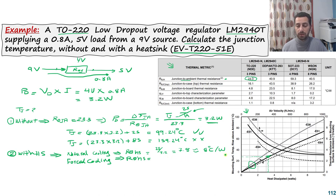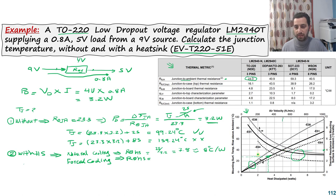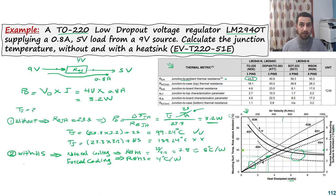For forced cooling, we consider an air velocity of 500 ft/min. Reading the forced cooling curves from the graph at 3.2 W gives a thermal resistance of about 4°C/W. Note that the y-axis of the forced cooling graph is in °C/W directly, while the natural cooling graph has a °C axis and a separate watt axis. Now applying the thermal Ohm's law again with the heat sink in the circuit.